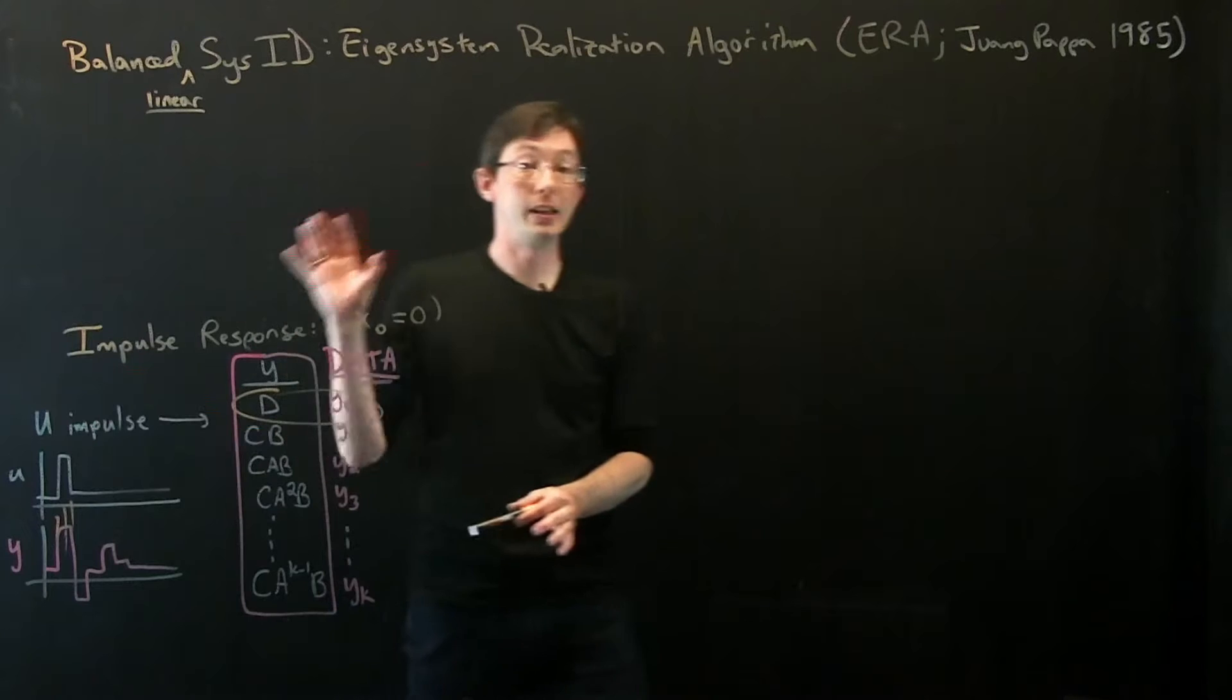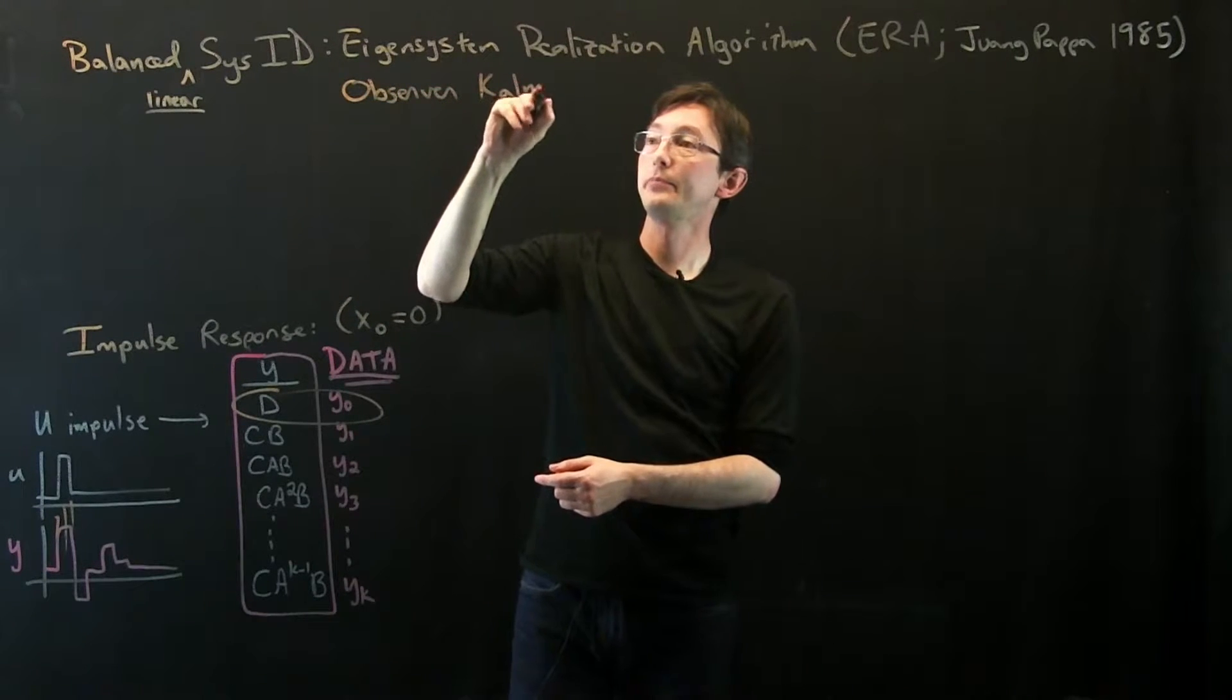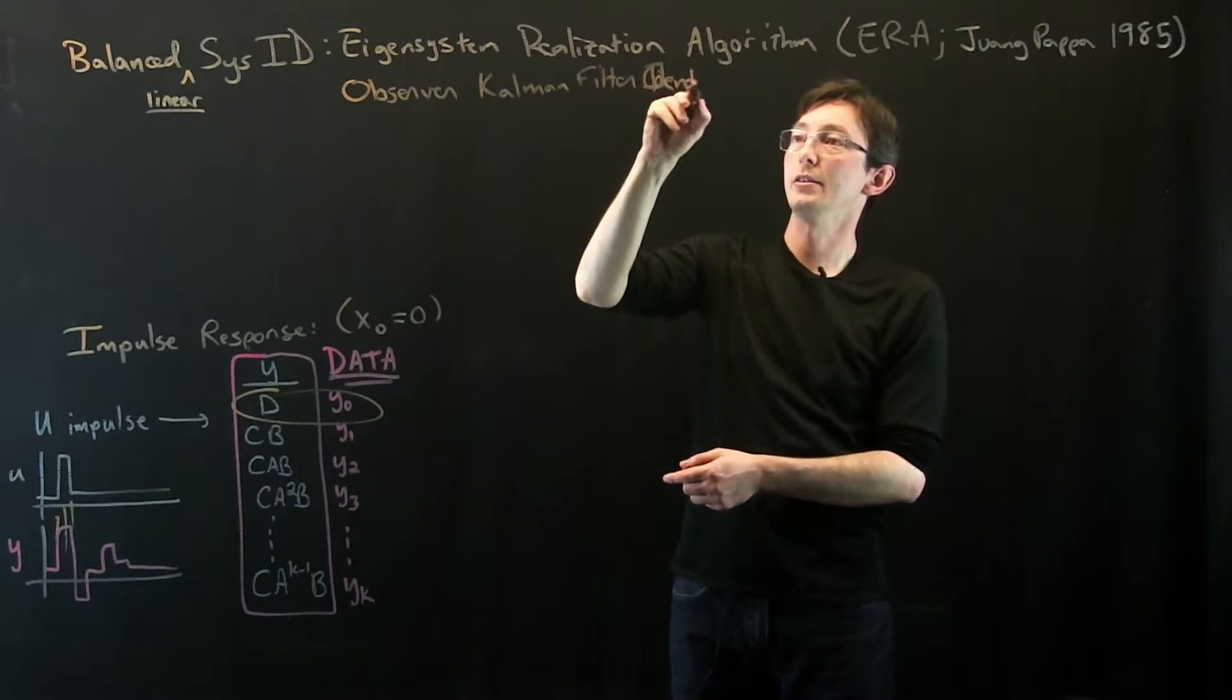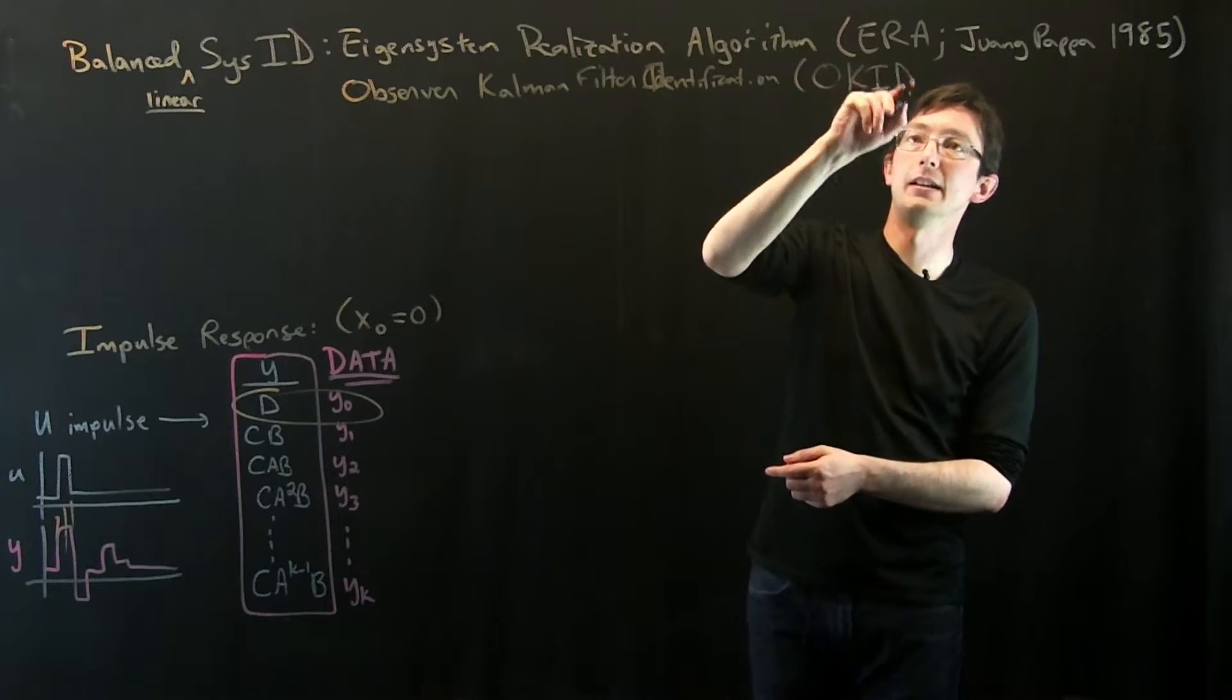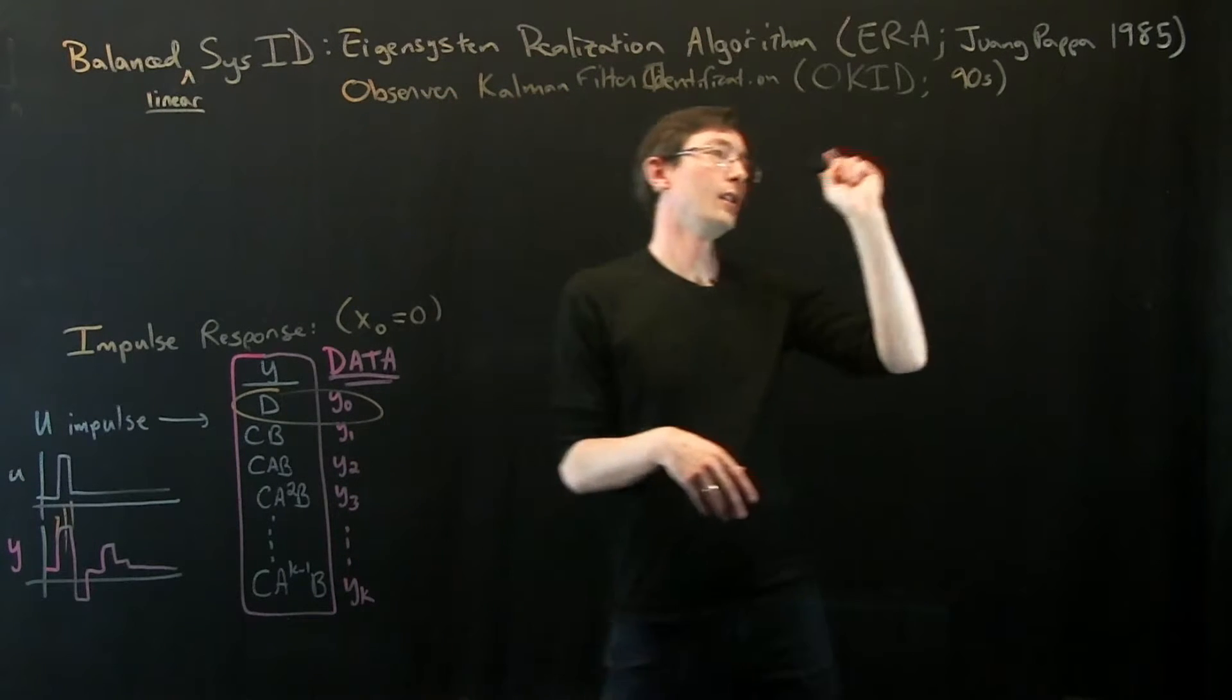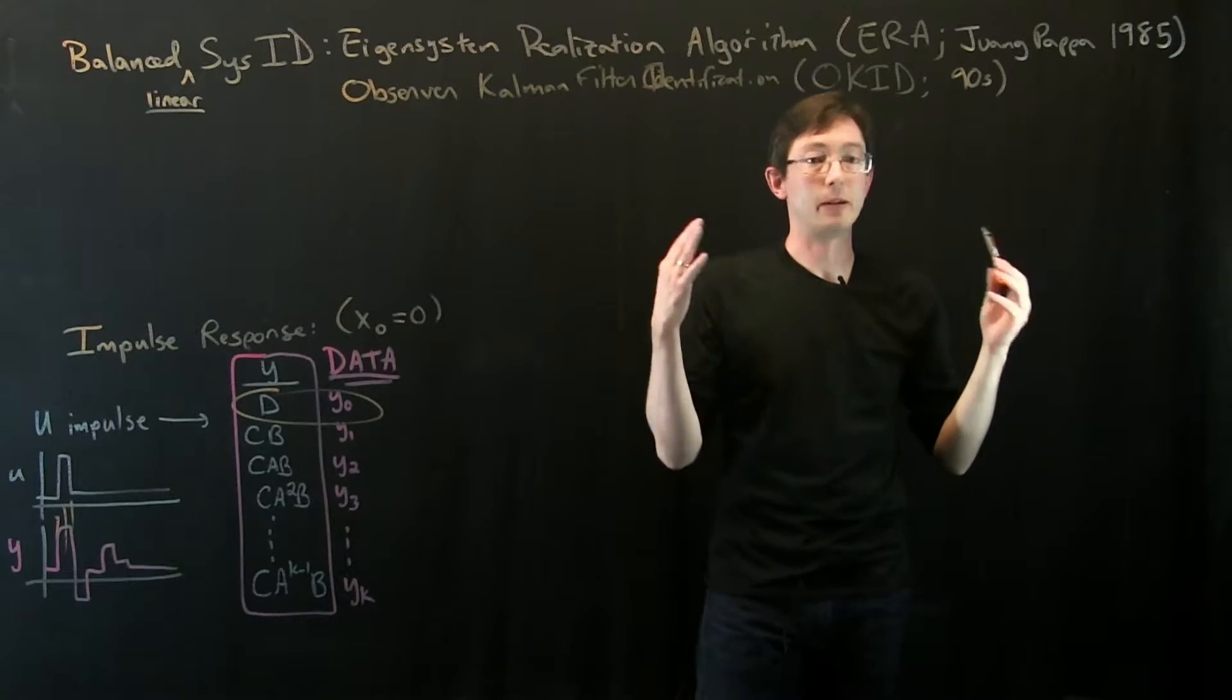All kinds of reasons why you might get a crappy impulse response and need to use something else. So there's a more powerful add-on to this called the Observer Kalman Filter Identification. It's called OKID. And I think this was developed in the 90s by a bunch of people at Princeton and Langley. The names that come to my mind are Fan and Longman, but I'm sure there were many others.